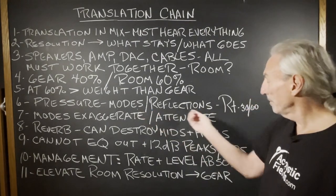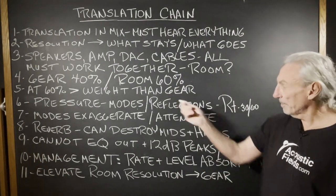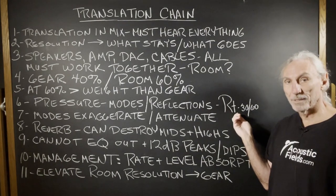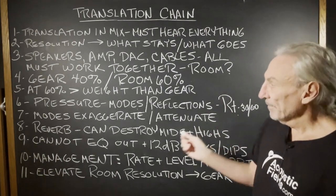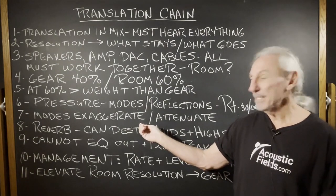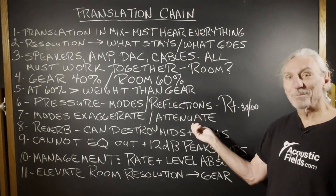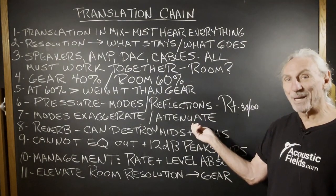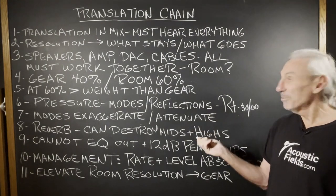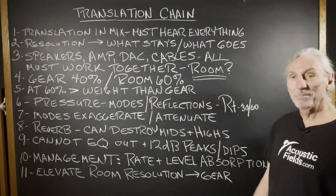What do we have? Pressure modes and reflections — pressure manifests itself in modes, reflections manifest in reverb times. Modes exaggerate, make things sound bigger than they are. Dips attenuate, completely eliminate your ability to hear certain octave bands. If that isn't power, I don't know what is. That's really big room power.